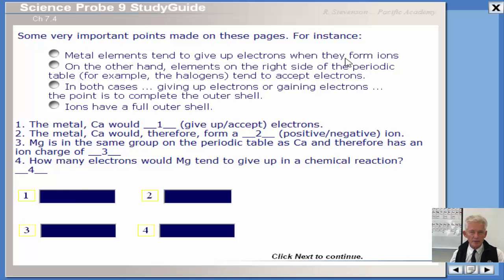So some very important points here that you might want to review. Metal elements tend to give up electrons when they form ions, become positive ions. On the other hand, elements on the right side of the periodic table, for example, the halogens, they become negative ions because they tend to accept those electrons. Chlorine accepts one electron because it has an empty space in its outer shell. It wants to have eight, but it only has seven. But it takes that one extra and becomes a one negative chloride ion.